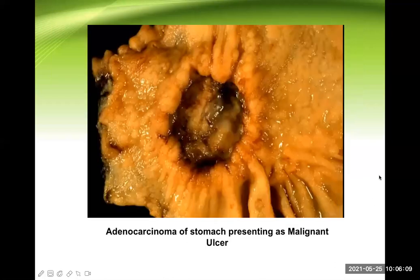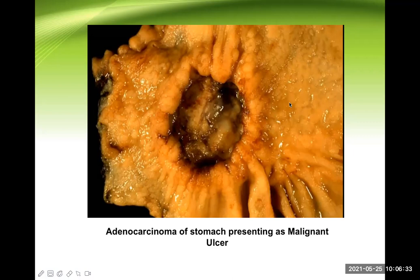Looking at this big ulcer: there is a necrotic base — slough, we call it — and the edge of the ulcer is an overhanging edge, quite irregular, and beaded in appearance. It is big in size. All these are important points for the malignant type of ulcer.